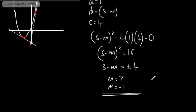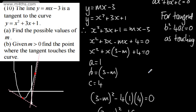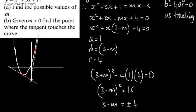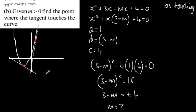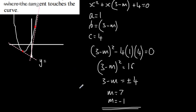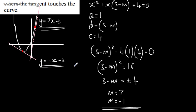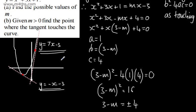Those are the values of m — a quadratic in m from the discriminant, since both lines touch the curve. The line y equals mx minus 3: if m is negative 1, that's y equals negative x minus 3; and if m is 7, that's y equals 7x minus 3. So that gives you the graphical representation of the situation.